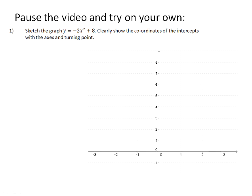I'd like for you to pause the video and try these questions on your own. Number one, sketch the graph y equals negative 2x squared plus 8. Clearly show the coordinates of the intercepts with the axes and the turning point. So that gives us a clue as to what we're going to need to calculate in order to draw this quadratic function.